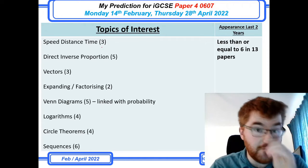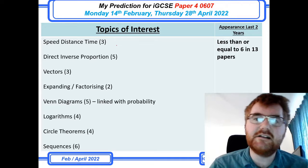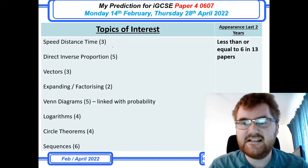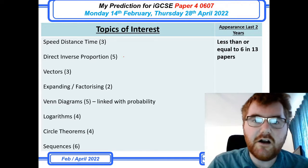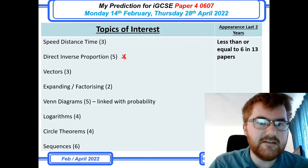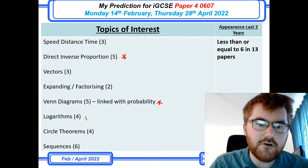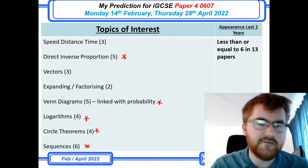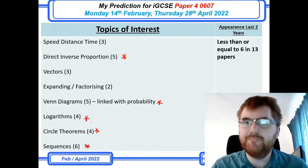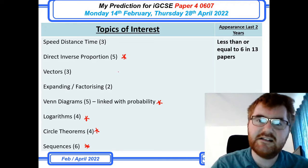We've got our so-called topics of interest. These are topics that appear less than or equal to six times in 13 papers. I'm going to highlight direct inverse proportion, Venn diagrams, log, circle theorems, and sequences. I want to talk about those very briefly before I move on to the often and almost certain topics.